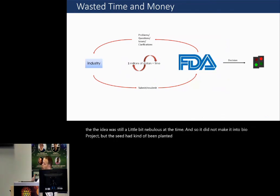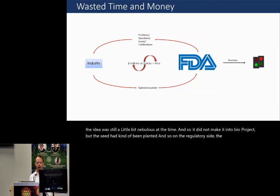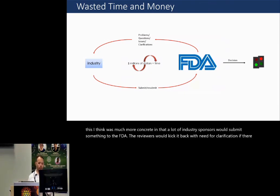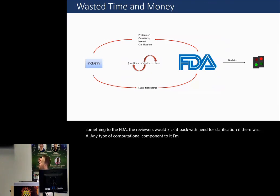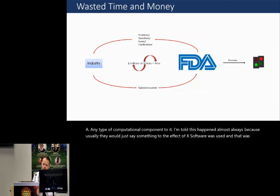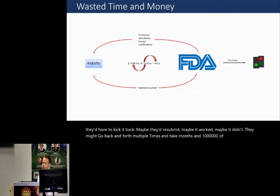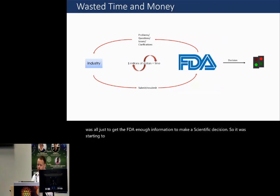And so on the regulatory side, the need for this was much more concrete in that a lot of industry sponsors would submit something to the FDA. The reviewers would kick it back with need for clarification if there was any type of computational component to it. And I'm told this happened almost always because usually they would just say something to the effect of X software was used and that was it. So they'd have to kick it back. Maybe they'd resubmit. Maybe it worked. Maybe it didn't. They might go back and forth multiple times and take months and millions of dollars. And this was all just to get the FDA enough information to make a scientific decision. So it was starting to cause a lot of frustration on both sides.